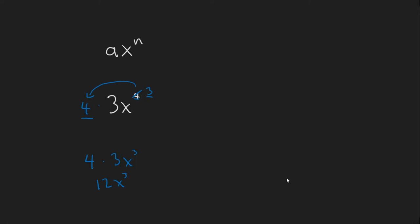If we want to find the anti-derivative we just do that process backwards. So if we start with 12x cubed, the second step was to subtract 1 from the power. So what we'll do now is add 1 to the power. So this would be a 4.